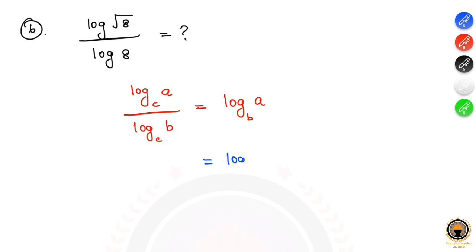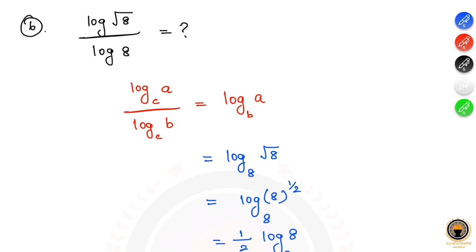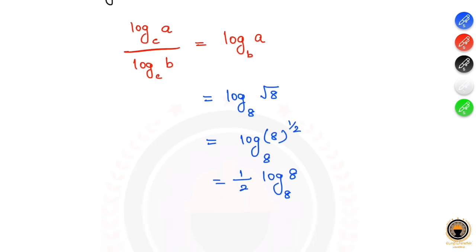Since √8 equals 8^(1/2), this becomes log base 8 of 8^(1/2), which equals 1/2 times log base 8 of 8. Since log base 8 of 8 equals 1, the answer is 1/2.